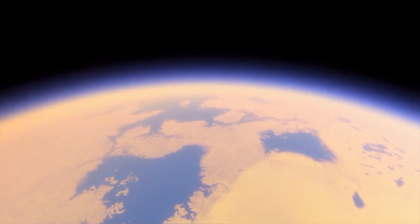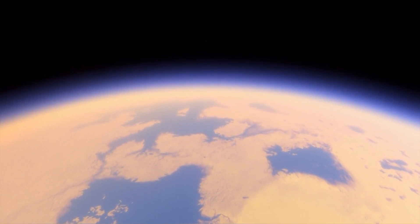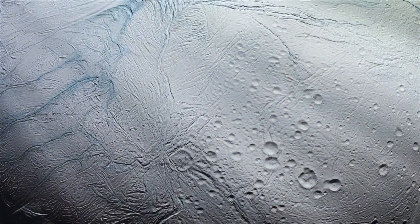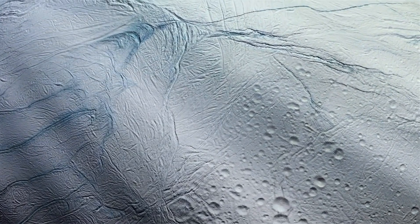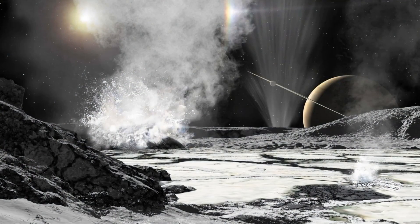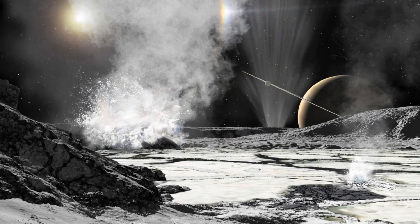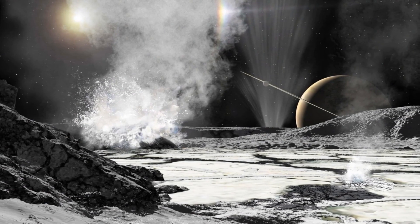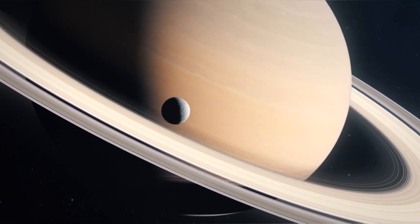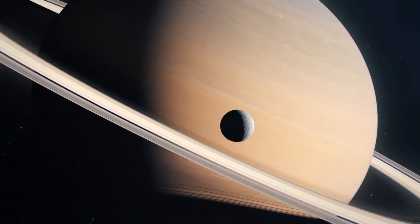Moreover, the possibility of life on Saturn's moons, particularly Titan and Enceladus, is a tantalizing prospect. Enceladus, with its subsurface ocean, and Titan, with its Earth-like characteristics, have become focal points in the search for extraterrestrial life. Enceladus, in particular, exhibits geysers spewing water into space, hinting at the potential habitability of its subsurface ocean. Future missions, such as NASA's Dragonfly mission to Titan, aim to explore these moons further, conducting in-depth analyses that might provide evidence of life beyond Earth.